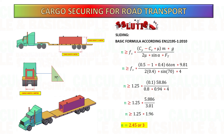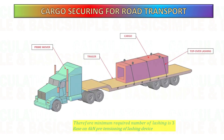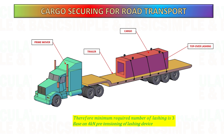Therefore, it requires a minimum of 3 pieces of top over lashing, based on 4 kN pre-tensioning of the lashing device. Don't forget to check the written standards.